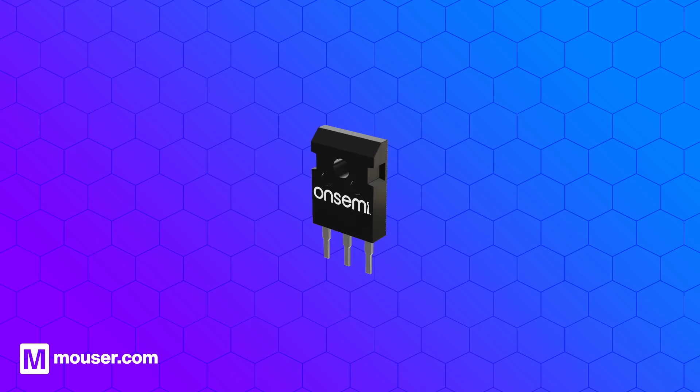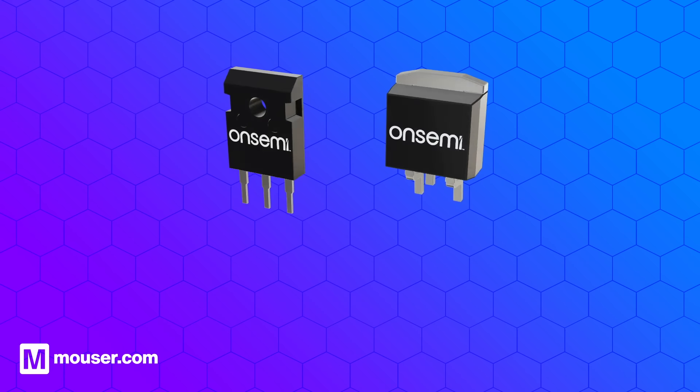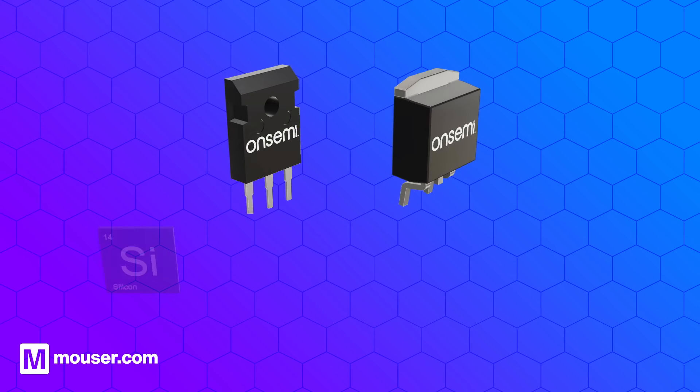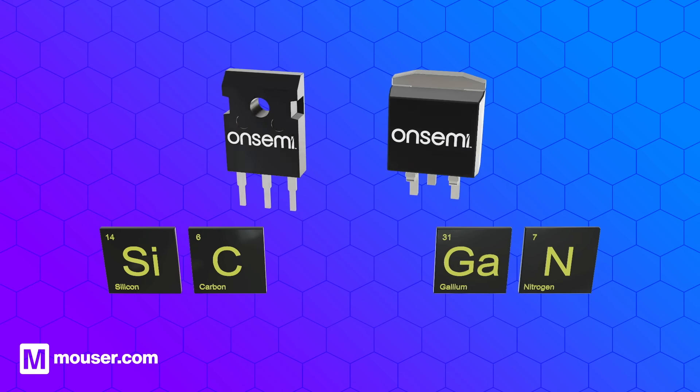Wide band gap refers to a relatively new kind of semiconductor material used to create diodes and MOSFETs. They are similar to silicon diodes and MOSFETs, but created using silicon carbide or gallium nitride.